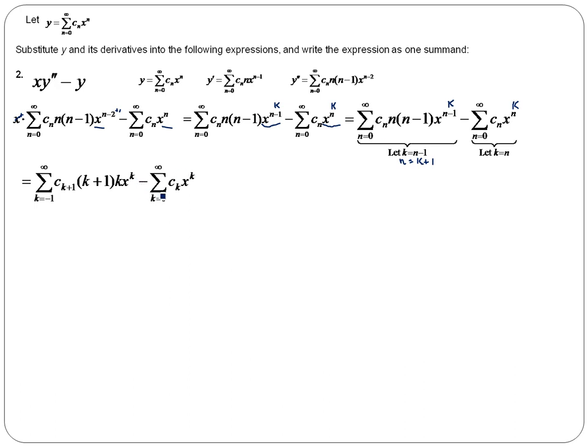On my second summation, I'm just changing each one of these n's to k. So I have summation as k goes from zero to infinity, c_k times x to the k.